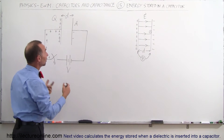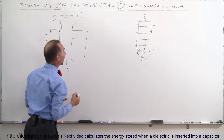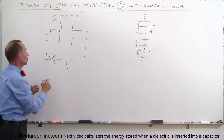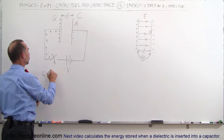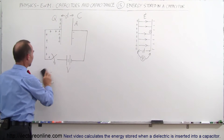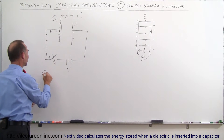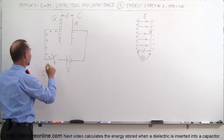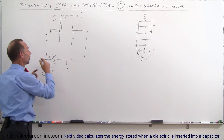The capacitor will have capacitance C, and the capacitance is defined as the charge that gets pushed onto the capacitor Q divided by the voltage which does the pushing.